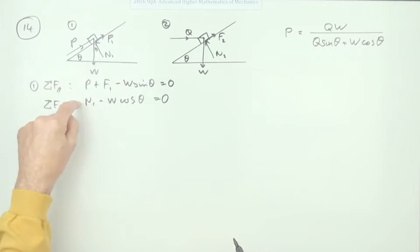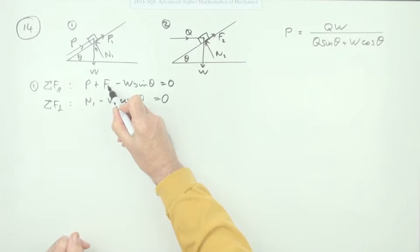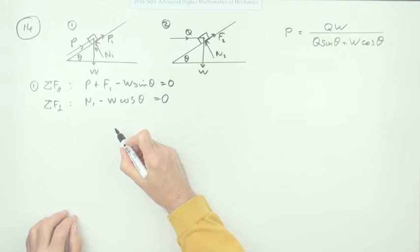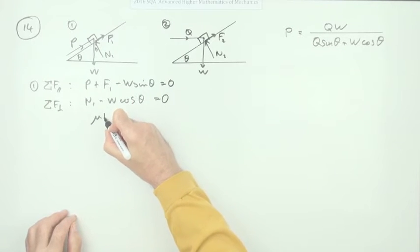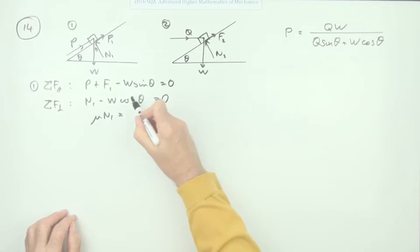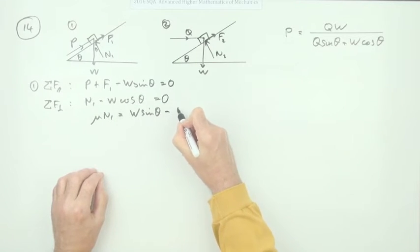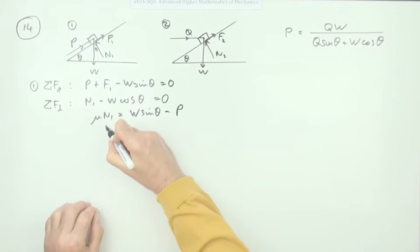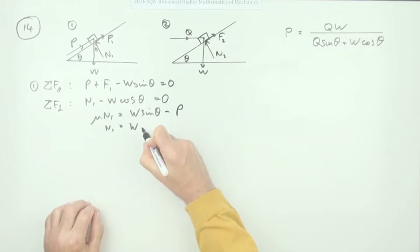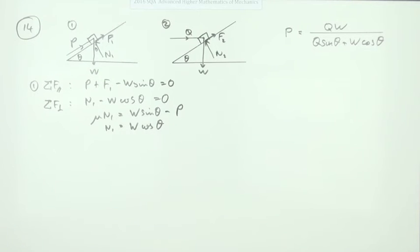Now you don't want f and n, so you want to eliminate them completely. But you know the connection is that F1 equals μ times N1. So you can rewrite the first one as μN1 equals, taking things across, W sin θ minus P. The second one, N1 equals, taking that across, W cos θ.